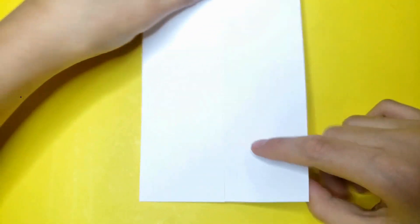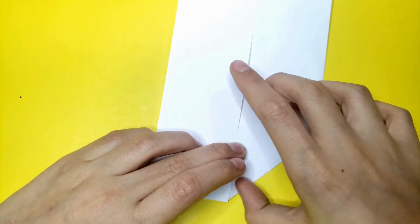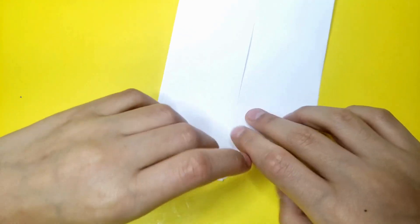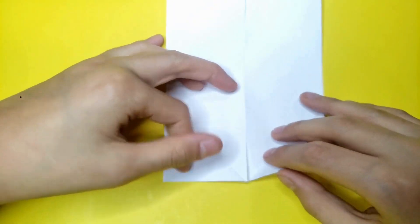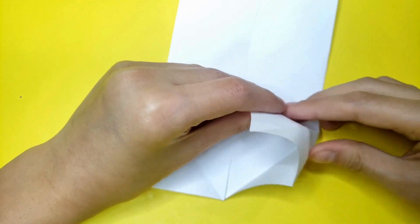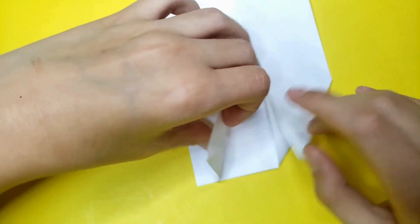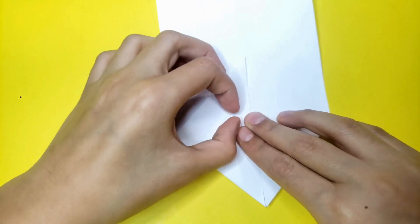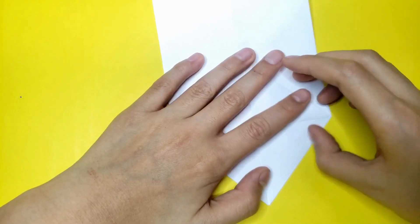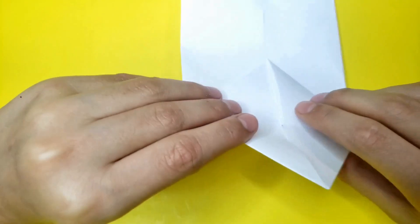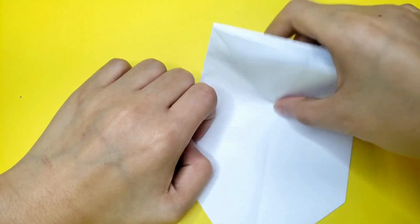Flip it over and fold this like an airplane. Do the same on the other side. We're going to inside reverse fold these two, then fold this down. Do the same with the other side, then fold this up on the point here.